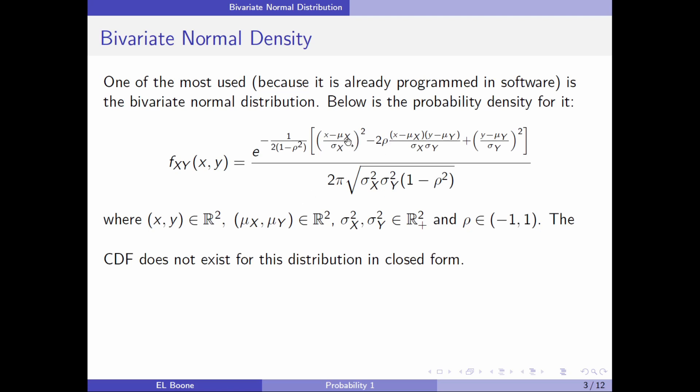Here we have the means, μ_x and μ_y. x and y have to be in R², μ_x and μ_y have to be in R², σ²_x and σ²_y have to be in R² positive, and ρ is our correlation coefficient, which we specify to be between negative 1 and 1.